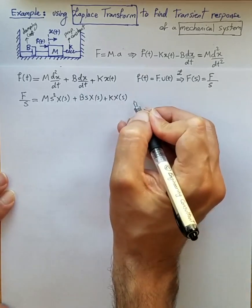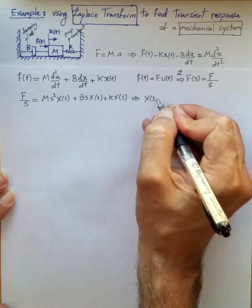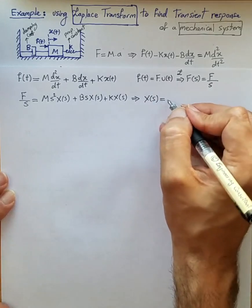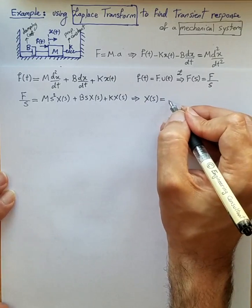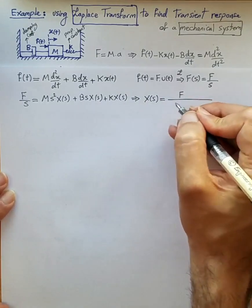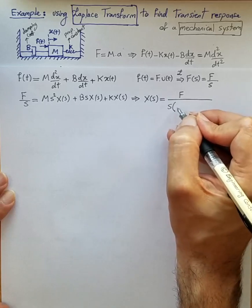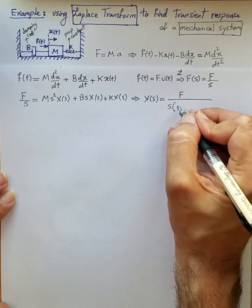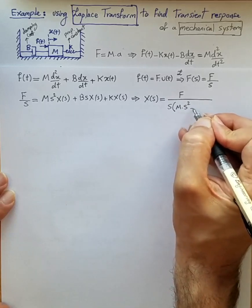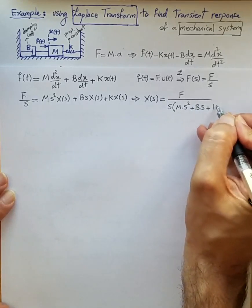This gives us m·s²·X(s) plus b·s·X(s) plus k·X(s), and from this we get X(s) — the s-domain representation of the displacement function — as the constant f divided by s times (m·s² + b·s + k).